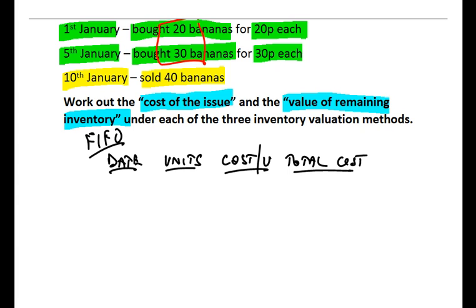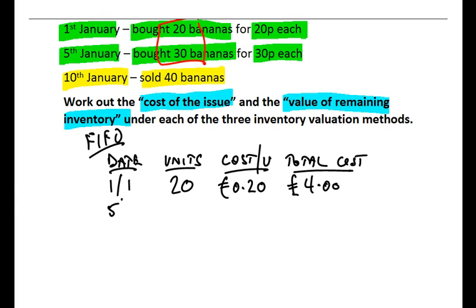On the 1st of January we have the first purchase: 20 bananas, an increase in inventory, so 20 units at a cost of 20 pence each — that's £0.20. To work out the total cost I multiply 20 units by £0.20, giving a total cost of £4. We've spent £4 on the first purchase of bananas, and at that point that's the value of our inventory.